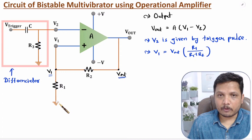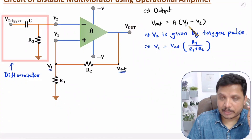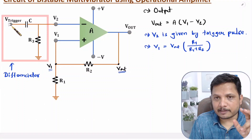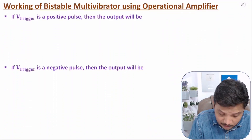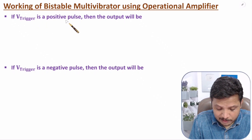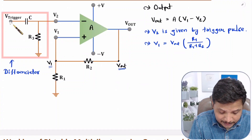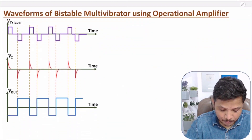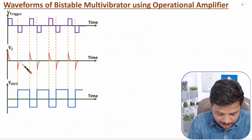Let us try to understand the working of the output equation. V trigger can be a positive pulse or it can be a negative pulse. In working, if V trigger is a positive pulse, then V2 will be a positive spike. If V trigger is a positive pulse, V2 will be having a positive spike, as explained in the waveform. And if V trigger is a negative pulse, then V2 will be a negative spike.